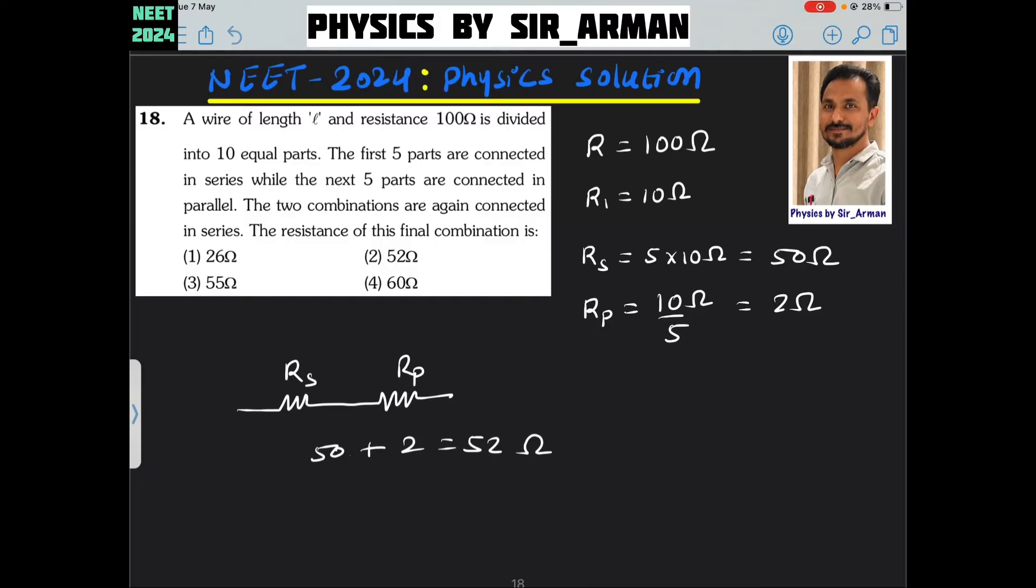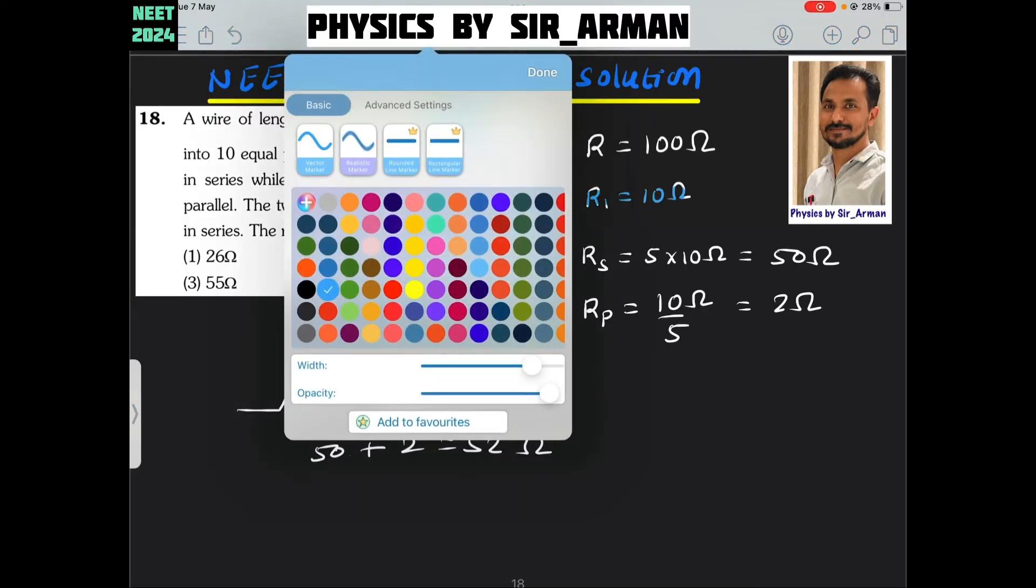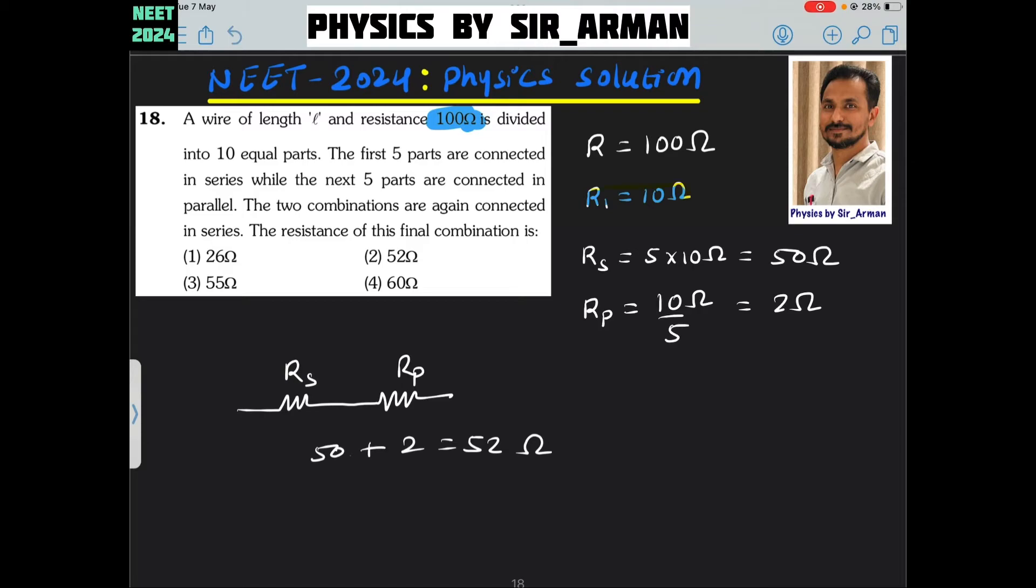Because it is given that the resistance of the whole wire is 100, if you divide it into 10 equal parts, then the resistance of each part will be 10 ohm.